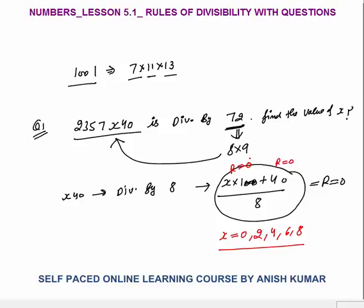Now we've checked only divisibility by 8. What about 9? The rule for 9 is that the sum of digits must be divisible by 9. Since the number is divisible by 72, the sum of digits must be divisible by 9. Sum: 2+3+5+7+4+0+x = 21+x. So 21+x must be divisible by 9.